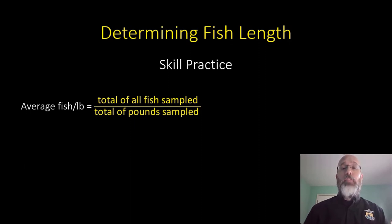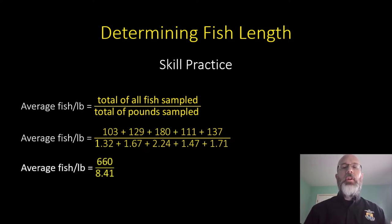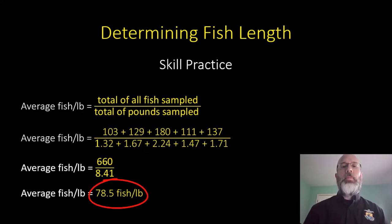Welcome back. The first thing you should have done was calculate average fish per pound by dividing the total number of fish sampled by the total number of pounds sampled. Plugging our numbers in — total fish sampled on top, total pounds sampled on the bottom — we had 660 total fish sampled and 8.41 pounds, giving an average of 78.5 fish per pound.